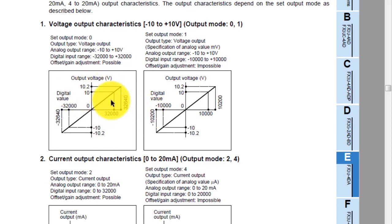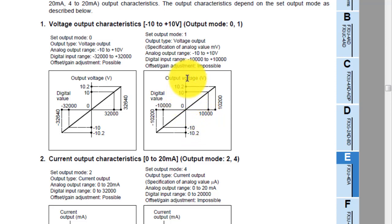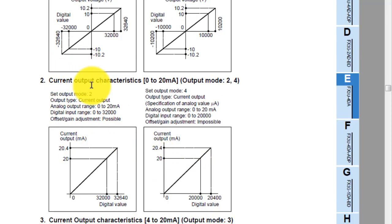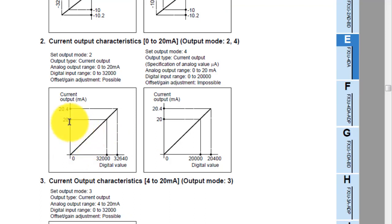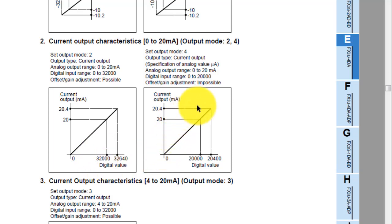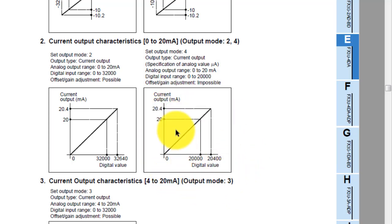You can see the maximum digital value for 10 volt output is 32,000. For current mode, maximum 20mA corresponds to a digital value of 32,000, or 20.4mA at the upper limit. The same concept applies across the output graph modes.